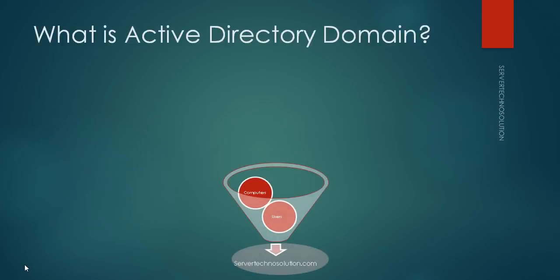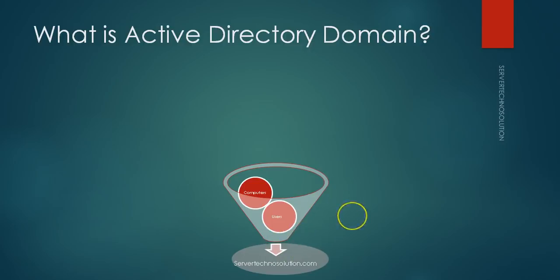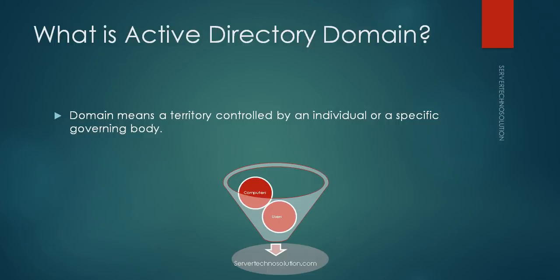Let's start with the first topic: what is an Active Directory domain? As I've mentioned in my previous video, it's a container in which we put all objects like users, computers, printers, and devices. Here I've made a container with two objects — users and computers. 'Server Techno Solution dot com' is the domain I prepared for these videos. Domain means a territory — if you look it up in a dictionary, it's a territory controlled by a person, a specific set of people, or a governing body.